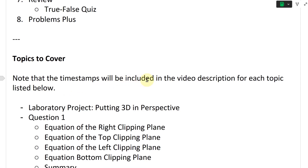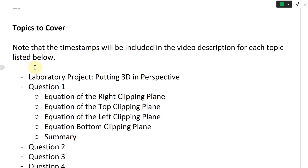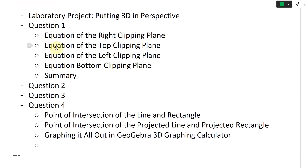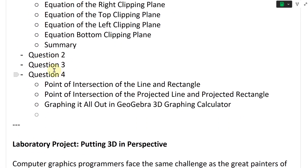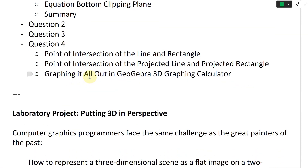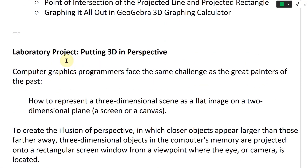The timestamps will be included in the video description for each topic. Here are the topics to cover for the laboratory project Putting 3D in Perspective: Question 1, covering the equation of the right clipping plane, equation of the top clipping plane, equation of the left clipping plane, the bottom clipping plane, and a summary of Question 1. Then Questions 2, 3, and 4. Question 4 will have several sections: the point of intersection of the line and rectangle, the point of intersection of the projected line and projected rectangle, and graphing it all in GeoGebra 3D graphing calculator.